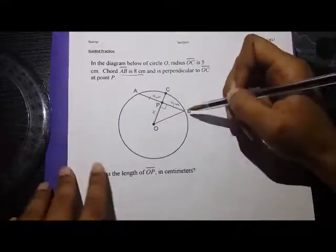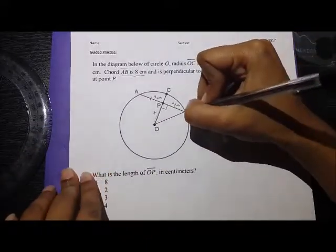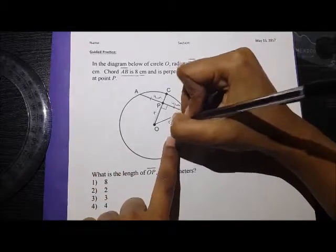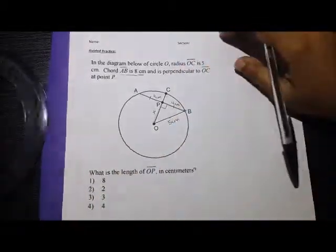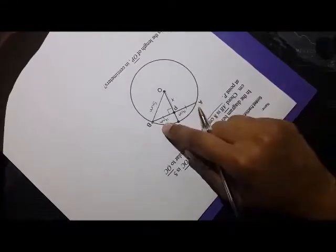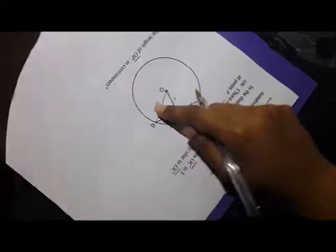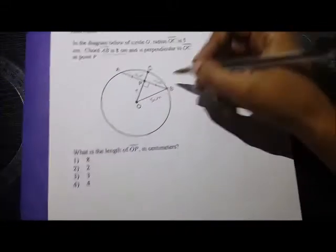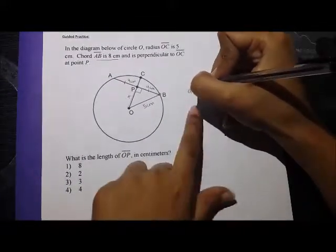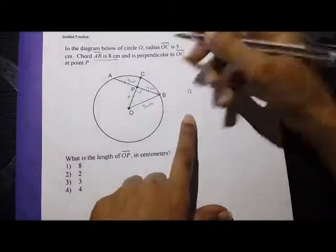And I know OB, because it's a radius, is going to be 5 centimeters. So now if I turn the paper, I have this right triangle that's 4 centimeters down here and 5 centimeters here. So I can use the Pythagorean theorem to figure out what OP would be.